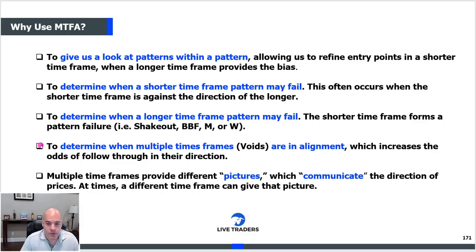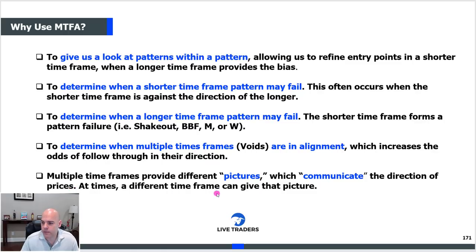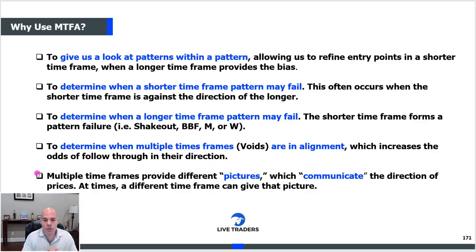The goal is to get as many time frames as you can in alignment. Why? Because the higher time frame represents bigger money. There's more money in a daily chart than in a five-minute chart. If you can get those time frames in alignment, there's a higher likelihood you'll make more money because there's commitment in that specific direction. Multiple time frames provide different pictures which communicate different things — the goal, in a perfect world, is to get the picture to match across all time frames.